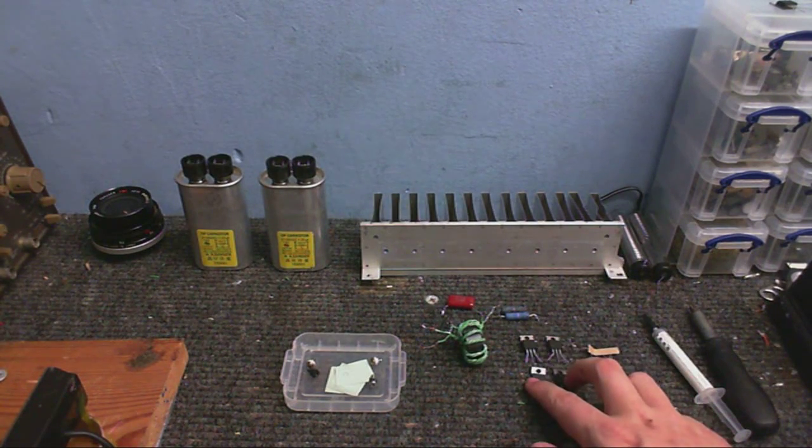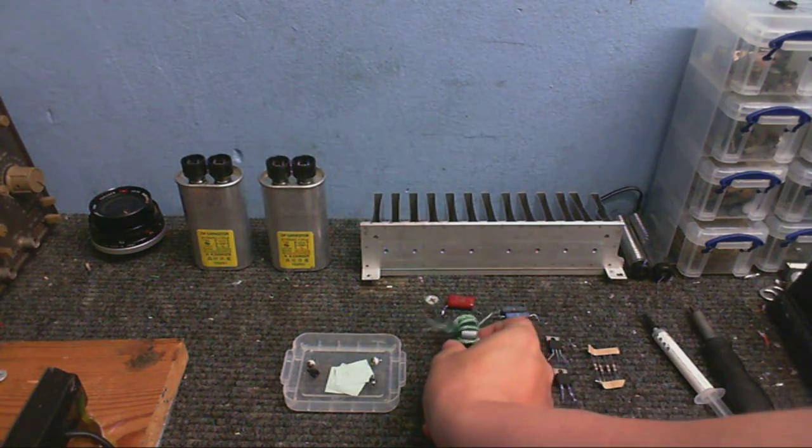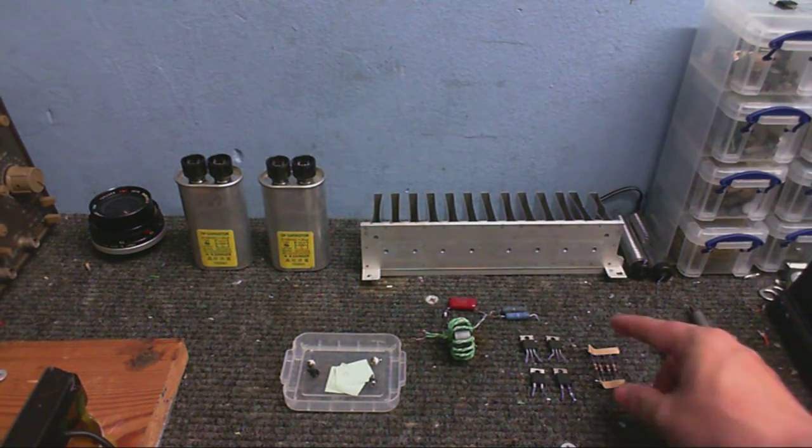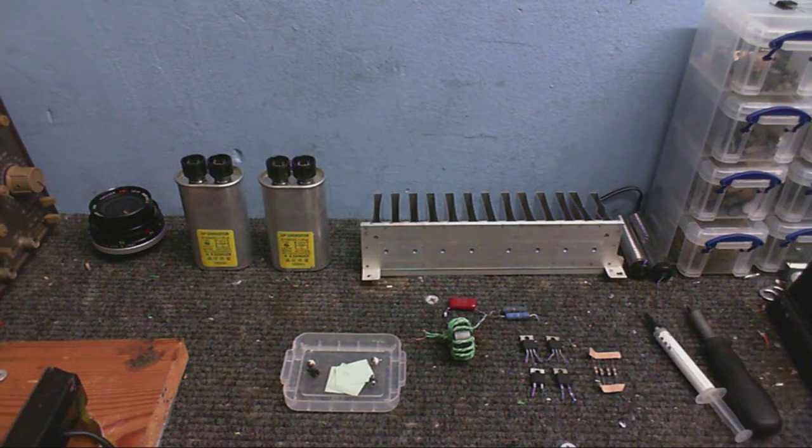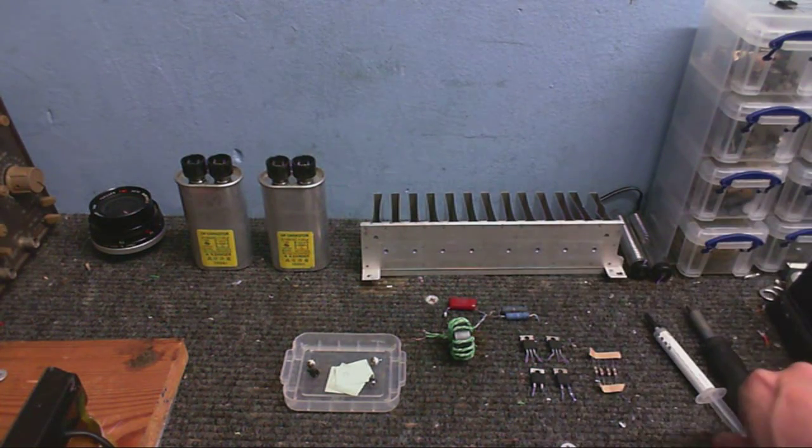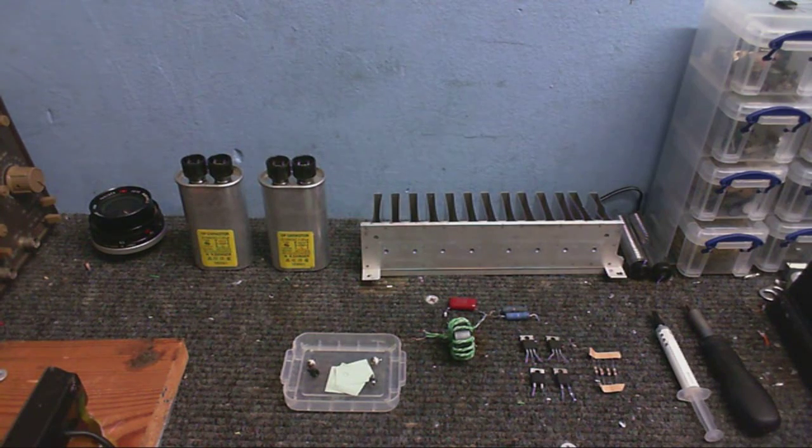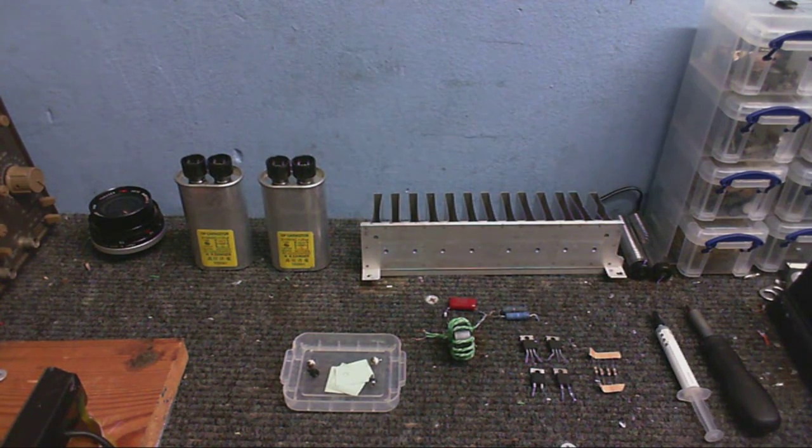I've got my MUR diodes, my gate drive transformer, the resistors and capacitors for the gate drive transformer, the gate resistors, and some other various bits and pieces such as solder, screws and thermal pads, thermal paste. Let's put together an output stage.